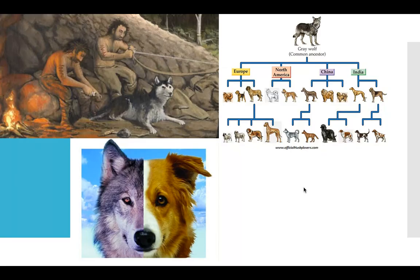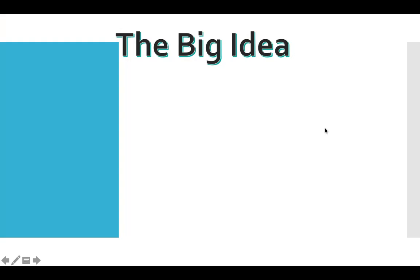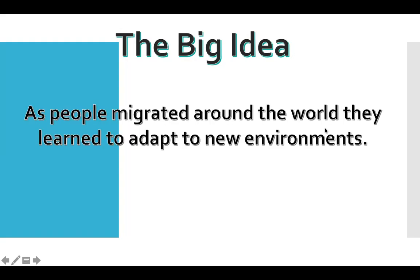People also used pets for hunting and protection — specifically dogs, which are descended from wolves. There's a side-by-side image of a dog and a wolf showing how they're related, and a chart showing the gray wolf and how it changed into various dog breeds throughout history. The big idea for this section is that as people migrated around the world, they learned to adapt to new environments.